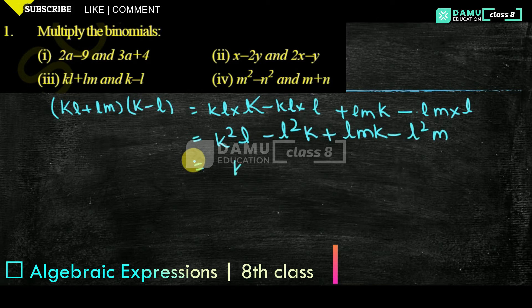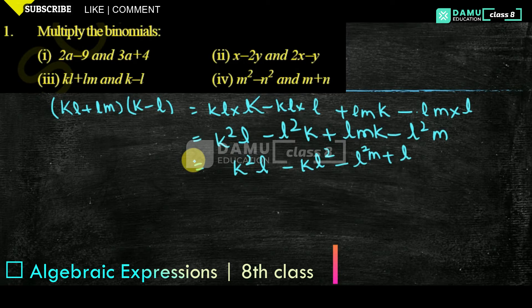What you can write here: k²l minus kl² minus l²m plus lmk, or kml, whatever — you can write like that.